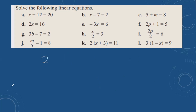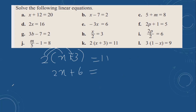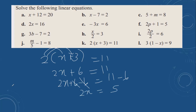Then next: 2(x plus 3) equals 11. First you can solve the bracket. 2 multiplied by 3 is plus 6, so 2x plus 6 equals 11. The opposite of plus 6 is minus 6 on both sides. These cancel out. 11 minus 6 is 5. 2x is equal to 5. Dividing both sides by 2, x is equal to 2.5.